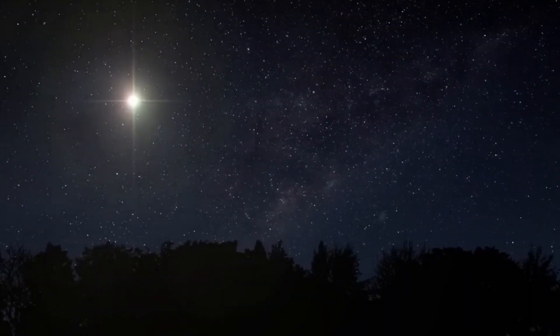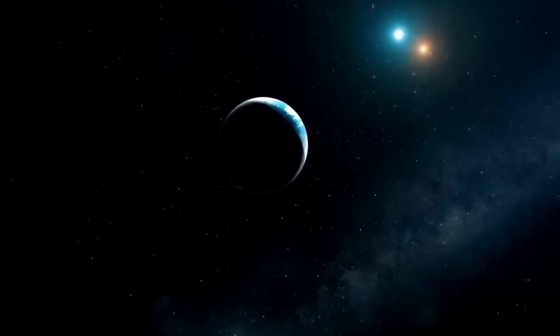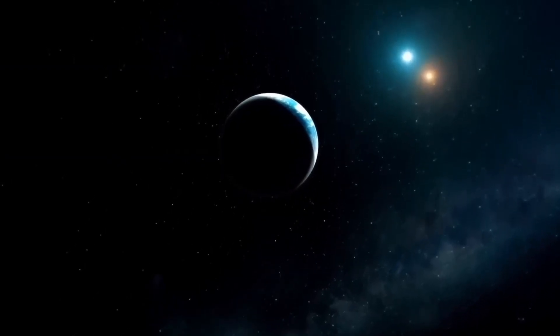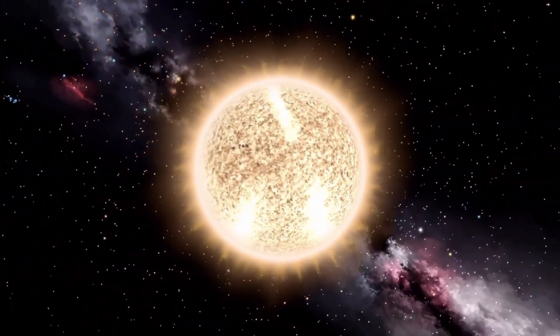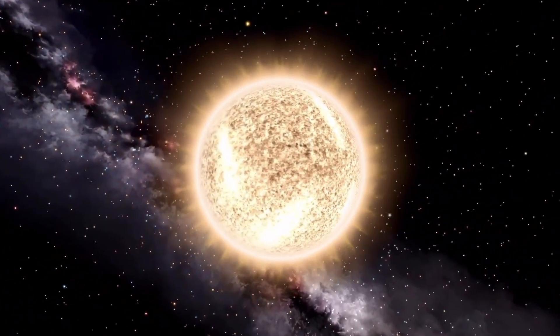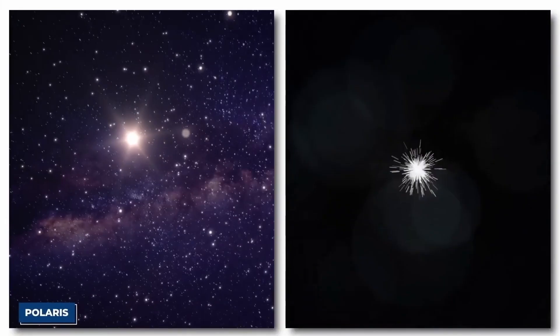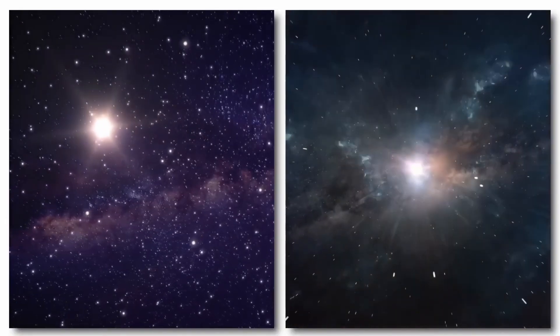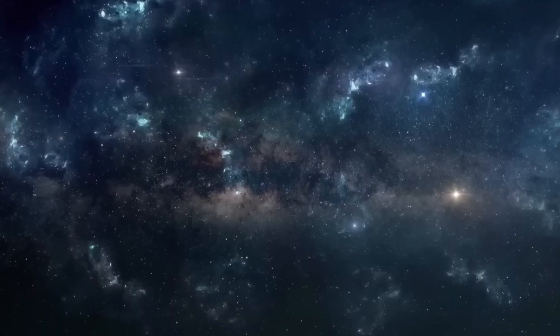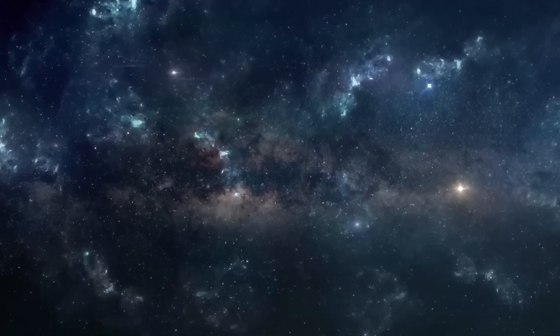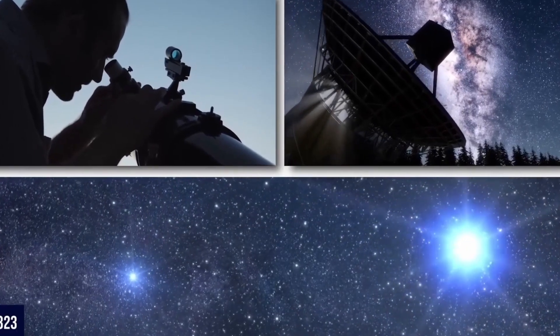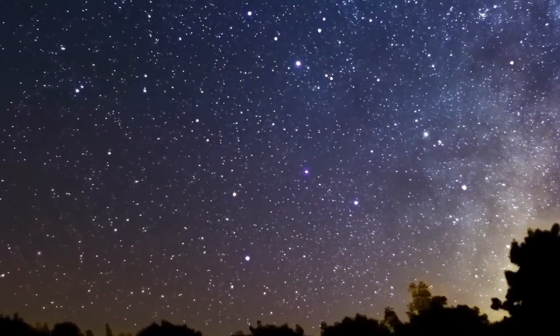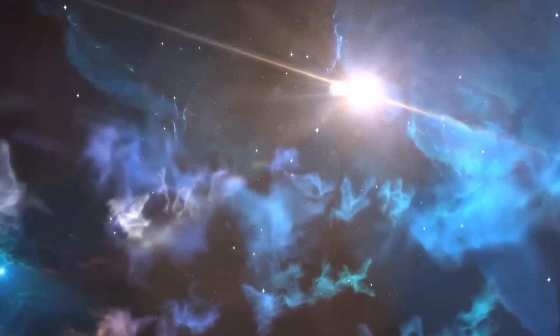If Polaris were to go supernova, it would likely be a spectacular event in our sky. The star would suddenly become incredibly bright, potentially outshining the moon and becoming one of the brightest objects in the night sky. This brightness could last for days, weeks, or even months. The appearance of the star might change drastically, transforming into a brilliant point of light or a transient object, possibly developing colorful hues before fading away. Such a visual display could temporarily alter our perception of the familiar pattern of the Big Dipper or Ursa Minor, as Polaris is the current North Star and a part of these constellations.